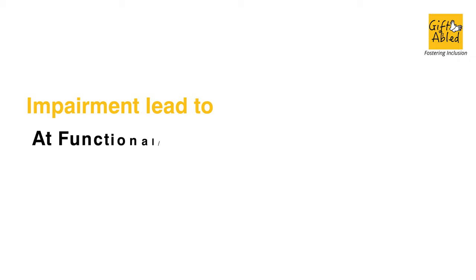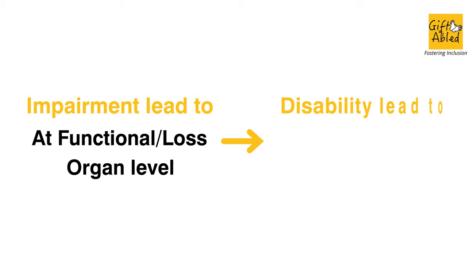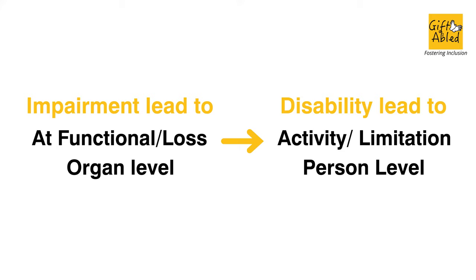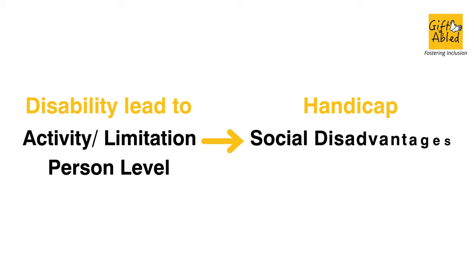Impairment leads to functional loss at the organ level. Disability leads to activity limitation at the person level. Handicap leads to social disadvantages at the societal level.